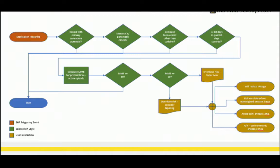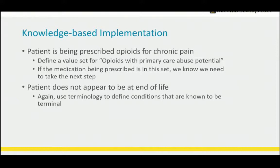For the condition that the patient is being prescribed opioids, we define a value set for opioids with primary care abuse potential, then look in their medication list — if they have any in this list, they're in that case. For patient does not appear to be at end of life, we use terminology to define the conditions we're looking for. It's not a perfect match, but there's a lot of sensitivity around figuring out when a patient is at end of life, and having that in the record isn't always even an option.